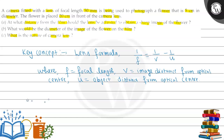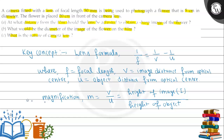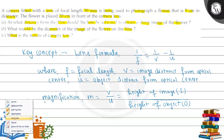We also need to use the formula for magnification. Magnification m is equal to v by u, or equivalently, height of image divided by height of object.